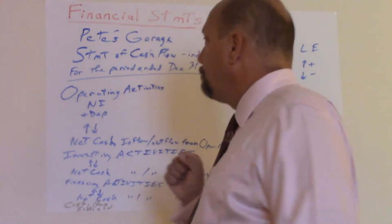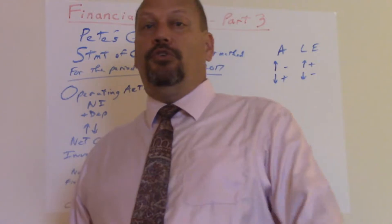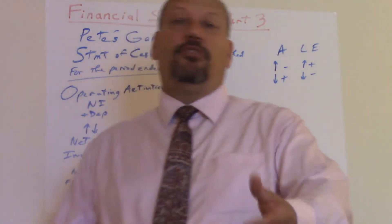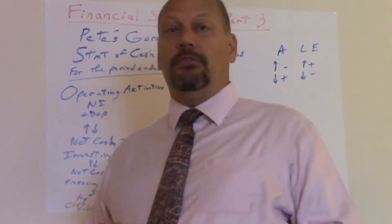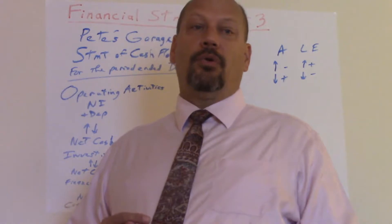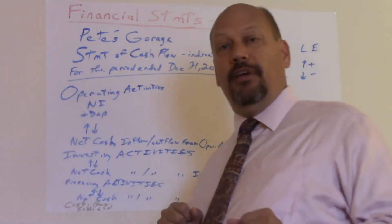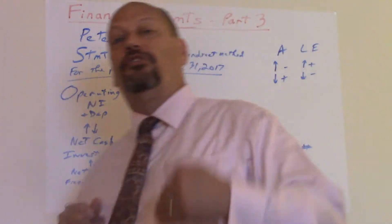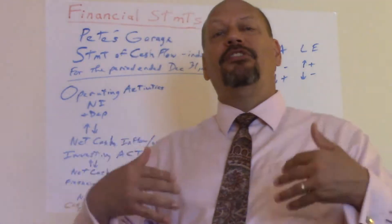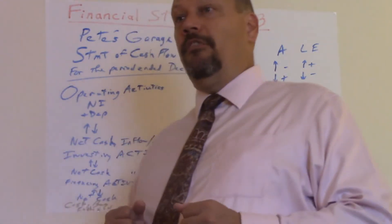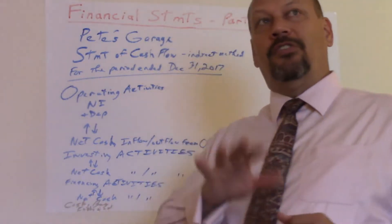Operating activities are simply what you do for your business — normal operations. Do you mow lawns? You're a lawn mowing business. Do you sell cars? You're a car dealership. Do you produce machines? You're in manufacturing. Investing activities mean investing in yourself or in someone else — like buying stock in another company, or investing in your own business by purchasing property, plant, equipment, land, or buildings. That's investing in yourself to help your business grow, and it's not the same as buying inventory, which is a normal operation.